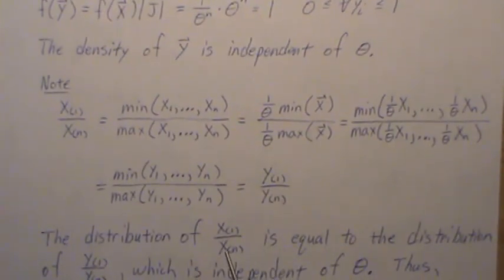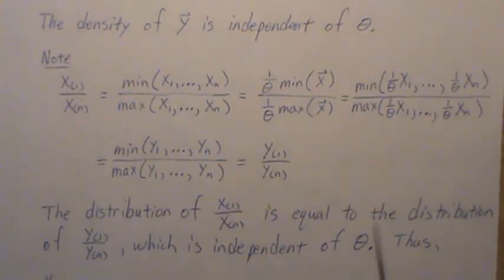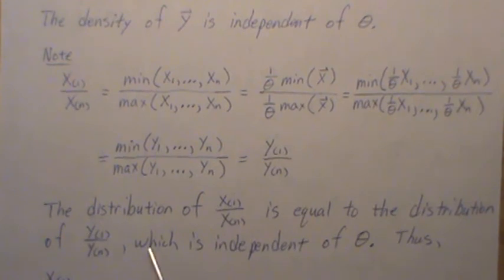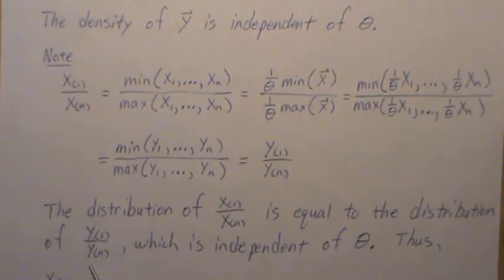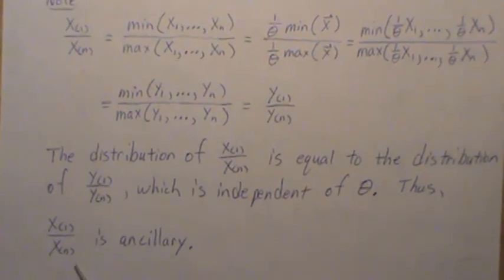But the distribution of y1 over yn is equal to the distribution of x1 over xn, is equal to the distribution of y1 over yn. And these y's are independent of theta. Right? So thus, this is independent of theta, which means it's ancillary.